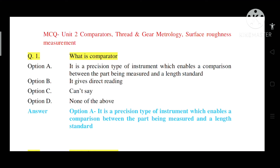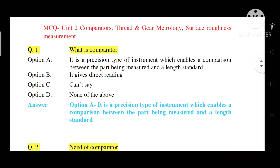Welcome back. Today we will see multiple choice questions on metallurgy and quality control, Unit Number 2 — Comparator trade and metallurgy, surface roughness measurement.